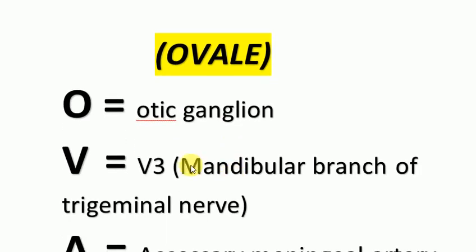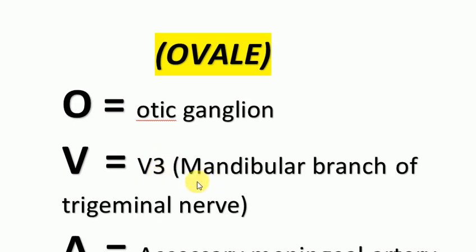O for Otic Ganglion. V for the mandibular branch of the trigeminal nerve. This V represents the fifth cranial nerve, that is the trigeminal nerve, and it shows the third branch of the trigeminal nerve — that is the mandibular branch.